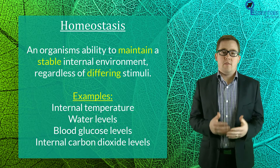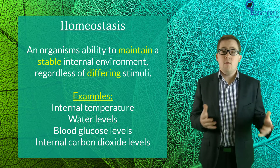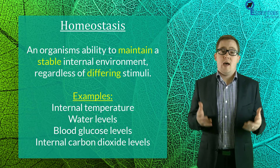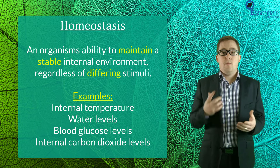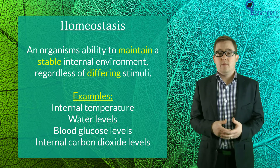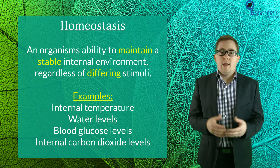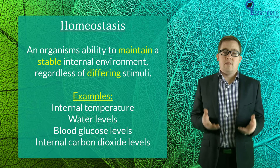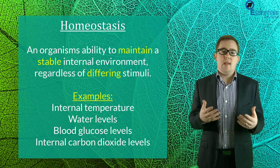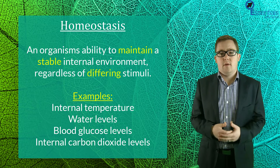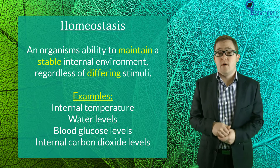Now there are many examples of variables which our body controls, but a few important ones are temperature, water levels, blood glucose levels and internal carbon dioxide levels. Now all of these examples have tolerance limits, and keeping levels inside of these tolerance limits will help organisms operate most efficiently.